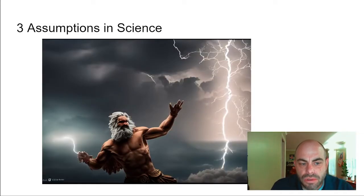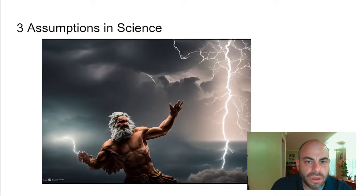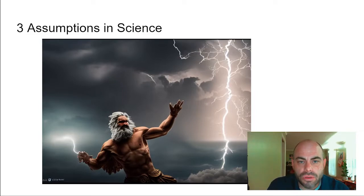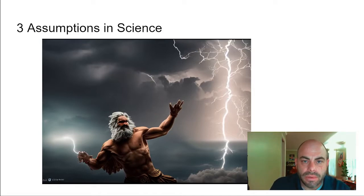There are three basic assumptions that are made in science, and this is important. All realms of thought and study have certain assumptions — philosophy, religion, anything you want to mention — there are certain assumptions made on the front end. Science also has those assumptions. This picture is great because you have Zeus here, who was known to throw lightning, but when science sees lightning it doesn't assume some supernatural power is at play. Science assumes there's something natural involved.